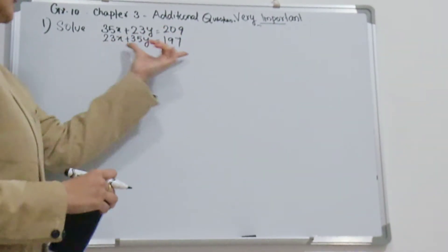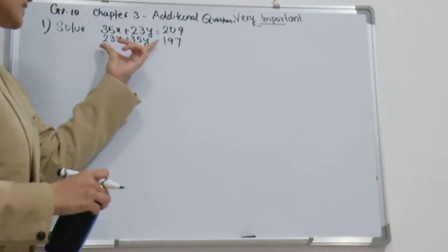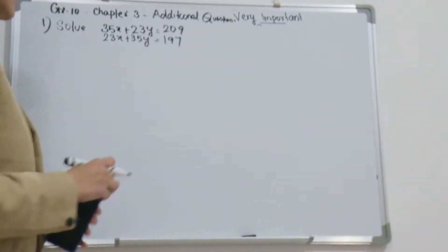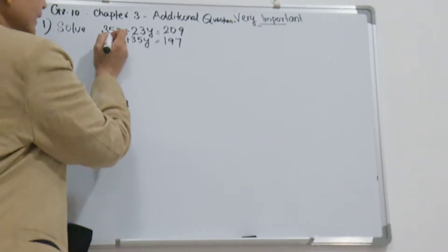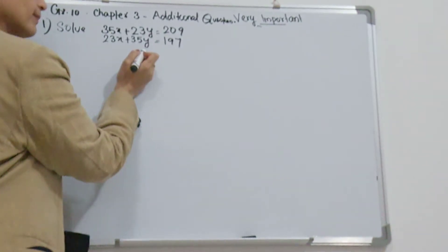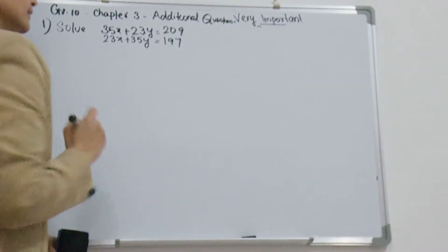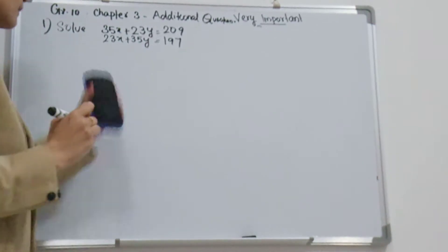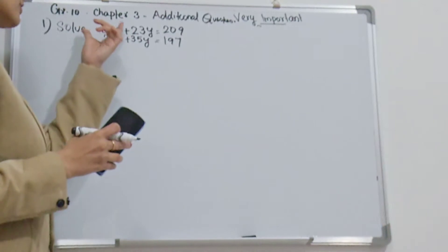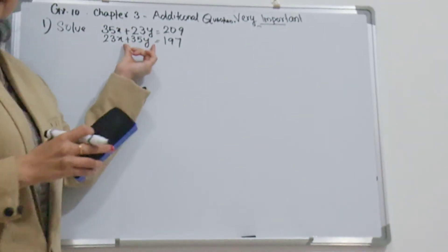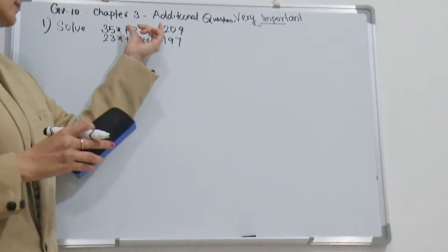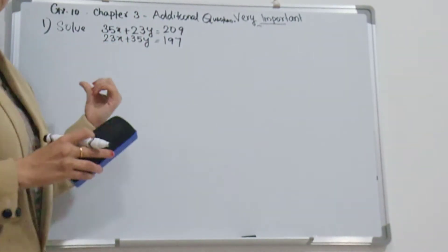Check these two linear equations. Is there any speciality for these equations? Here, the coefficient of x in the first equation is 35, and the coefficient of y in the second equation is also 35. The coefficient of y in the first equation is equal to the coefficient of x in the second equation.